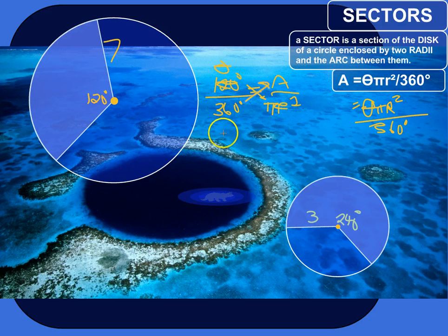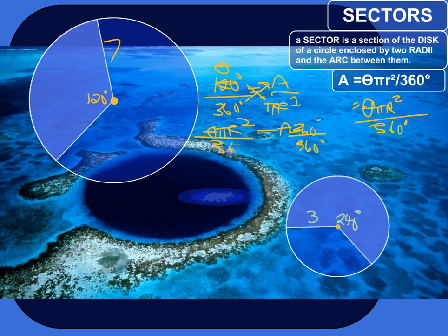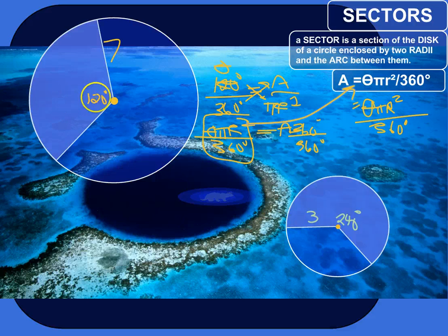So I can cross-multiply to solve for this proportion. I could have pi r squared times theta, or theta pi r squared, is equal to the area times 360 degrees. Then to solve for area, I divide both sides by 360 degrees. And that's our formula — that's where it comes from. Now that we know what that means, let's use that formula to figure out the area of these two different sectors.